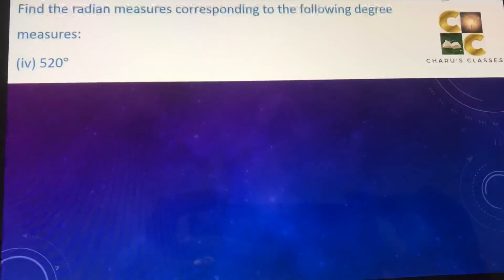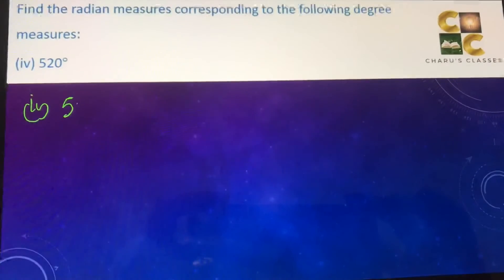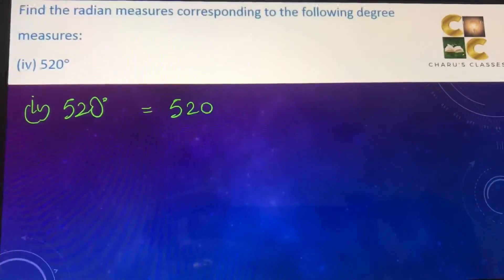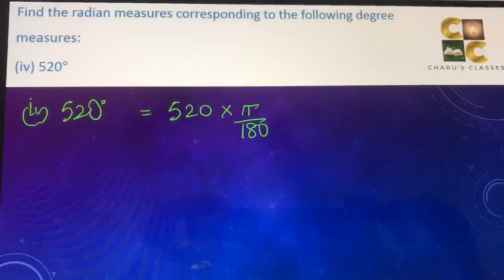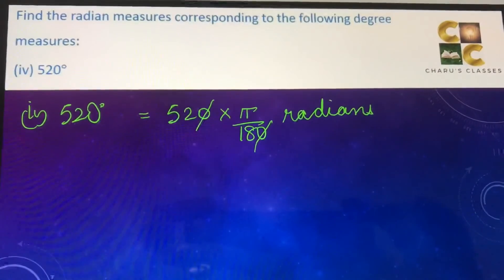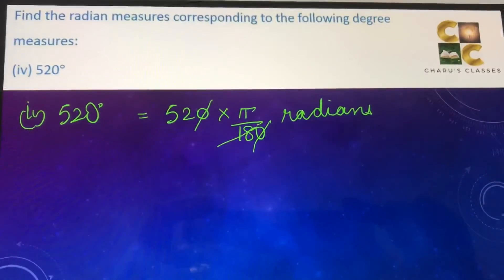Part four, 520 degrees. That is equal to 520 into π by 180 radians.